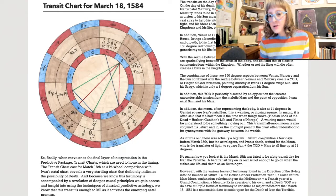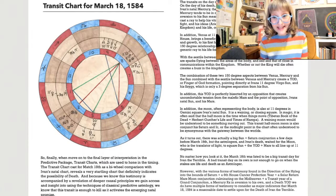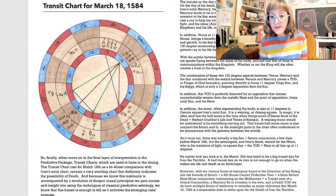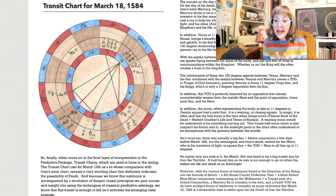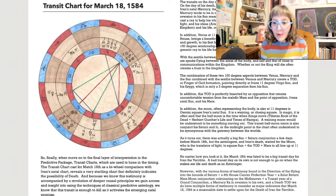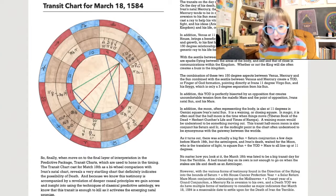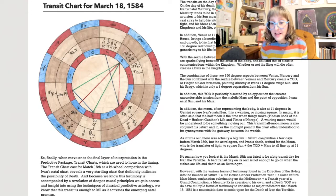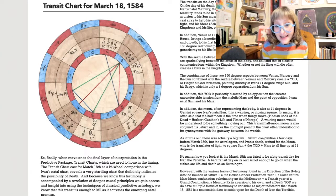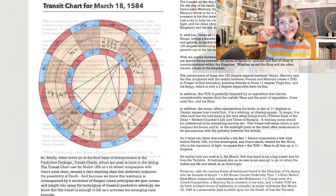On its own, a bad transit day is not enough to go on, especially when the stakes are life and death as an astrologer. However, with the various forms of testimony found in the direction of the Hyleg into the bounds of Saturn, plus a sixth house Cancer perfection year, plus a solar return Mars-Moon conjunction culminating on the Midheaven, plus a transit year of a grand conjunction, a Mercury retrograde in aversion to his own Sun, and a death yod, we do have multiple forms of testimony to consider as major indicators that March 18th, 1584, is a reasonable date to settle upon for the death of Ivan the Terrible. However, I also have an alternate ending for you here.